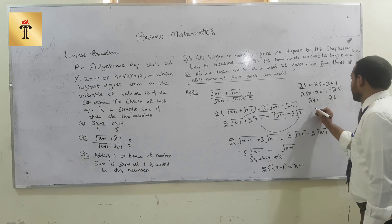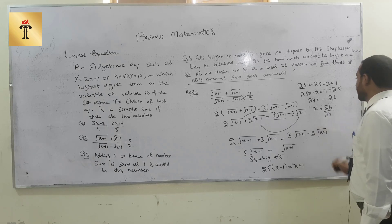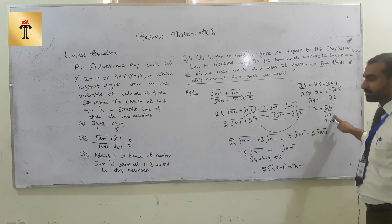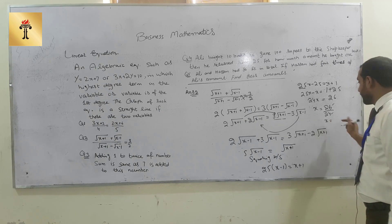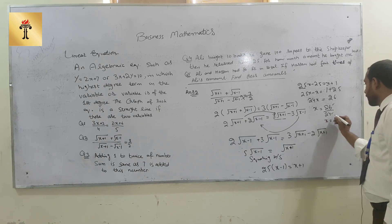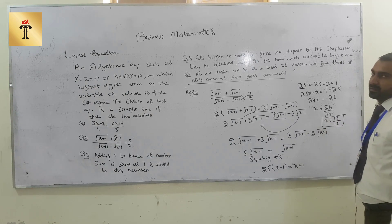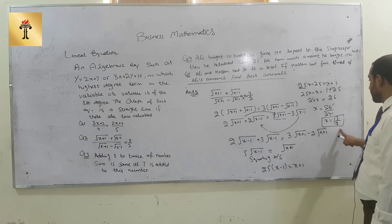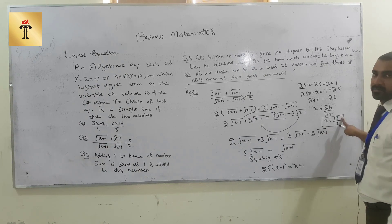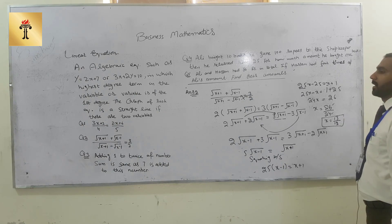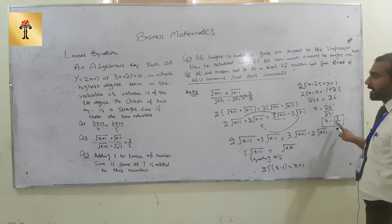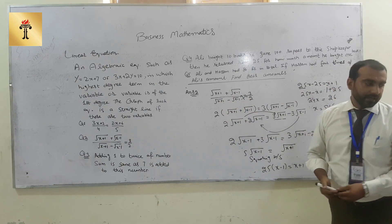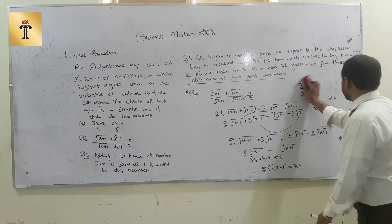Since x terms appear on both sides, we keep the maximum on the left: 25x - x = 1 + 25, giving 24x = 26, so x = 26/24. We can simplify by dividing both by 2: x = 13/12. We cannot simplify further because 13 is a prime number, so the solution is x = 13/12.